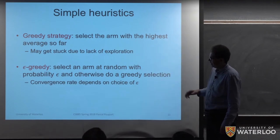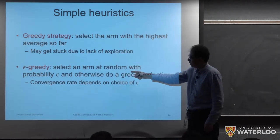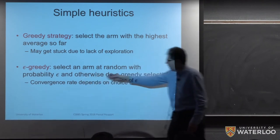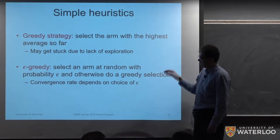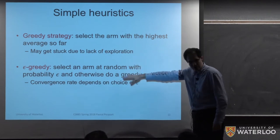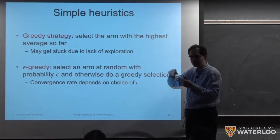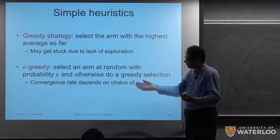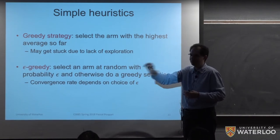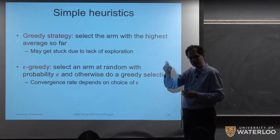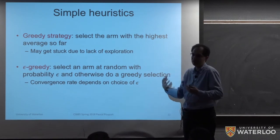If we need to explore, a simple approach is epsilon-greedy: select an arm at random with probability epsilon, otherwise select the best action greedily. This ensures some exploration, but the convergence rate — how quickly we discover the best arm — depends on epsilon. Once we've discovered the best arm, we'd like to just play it all the time, so there's an interesting question about how to reduce epsilon to avoid paying too high a price for exploring.